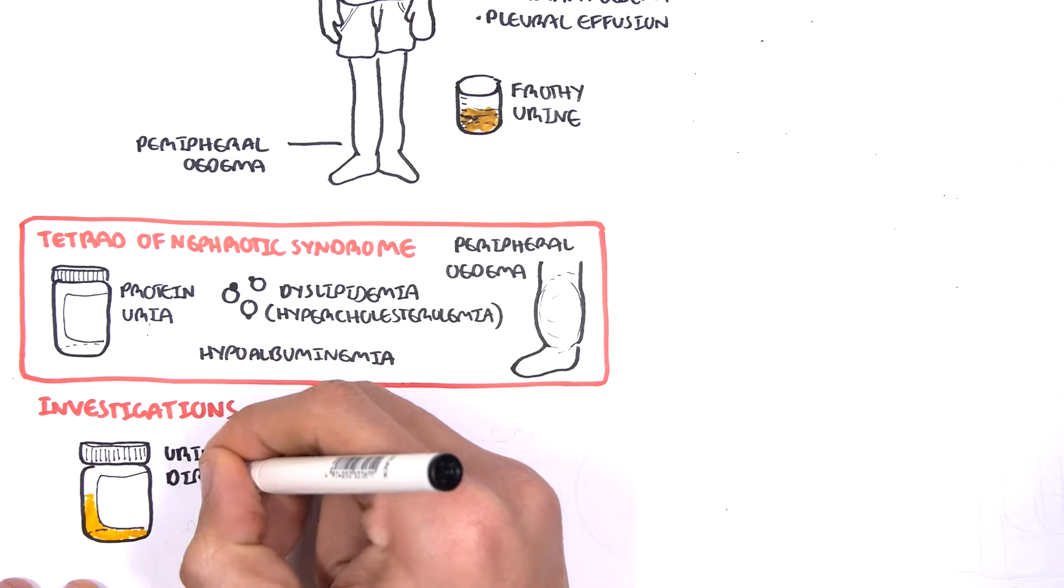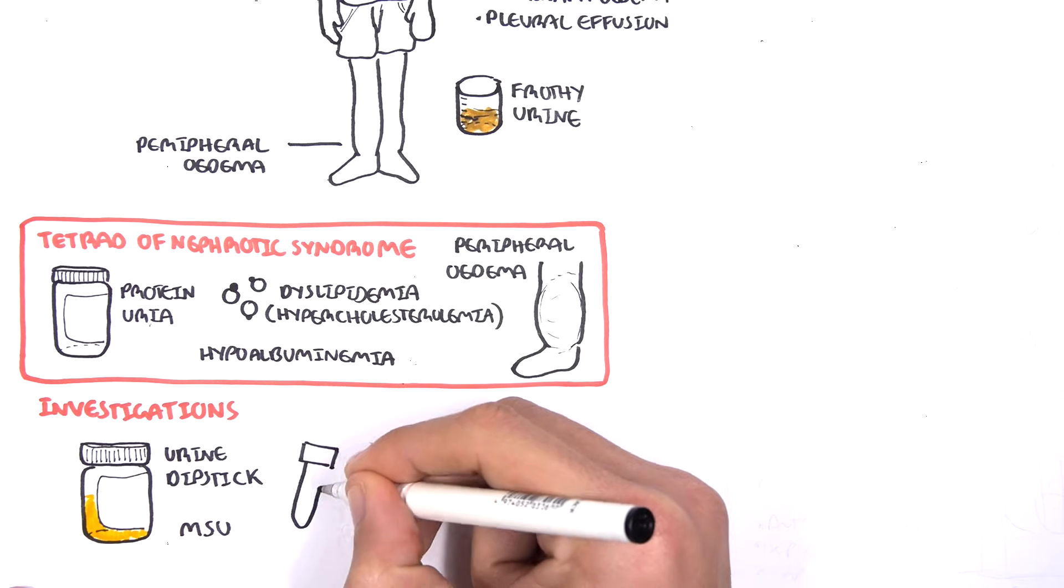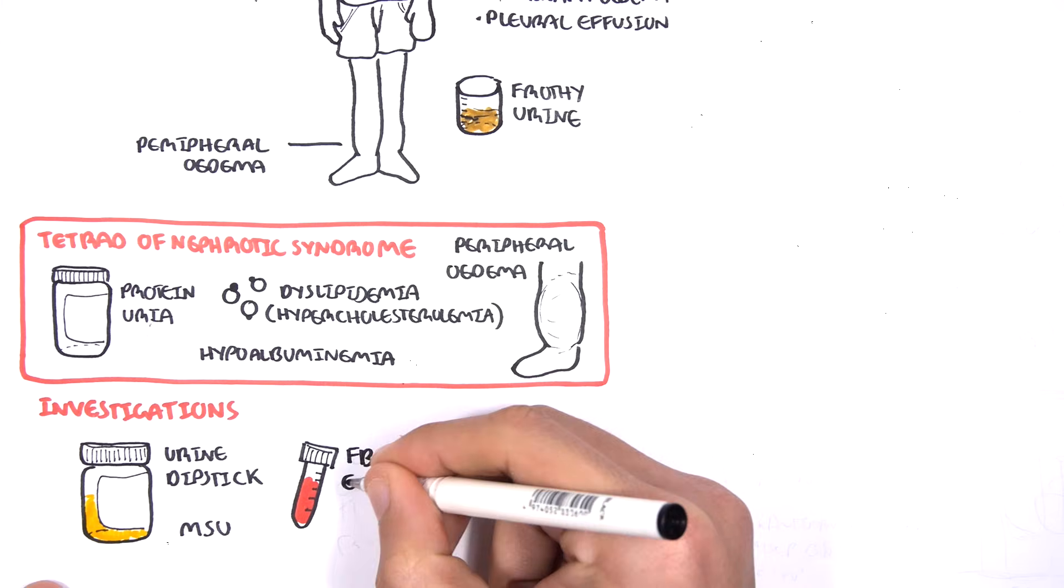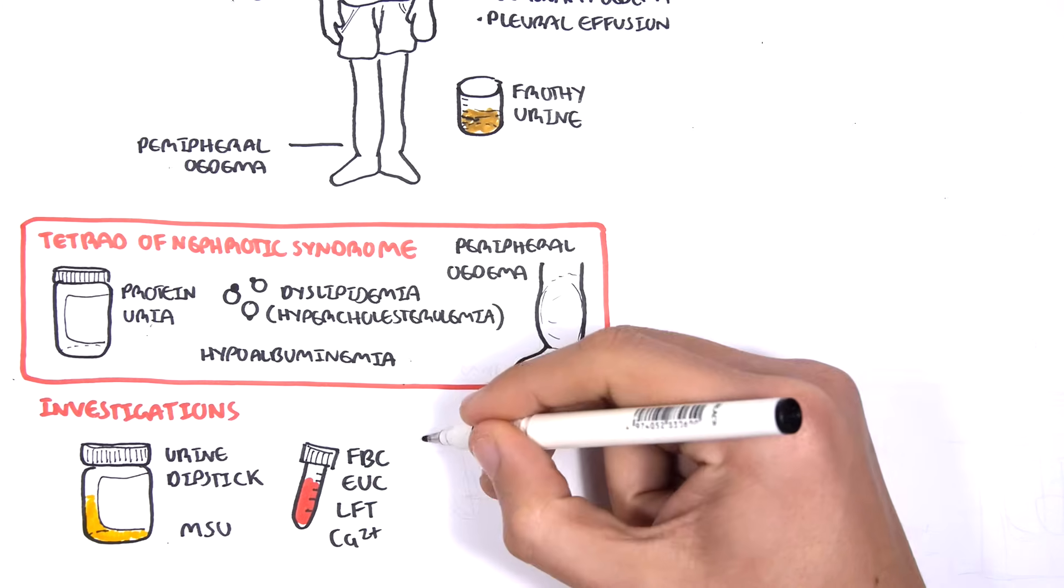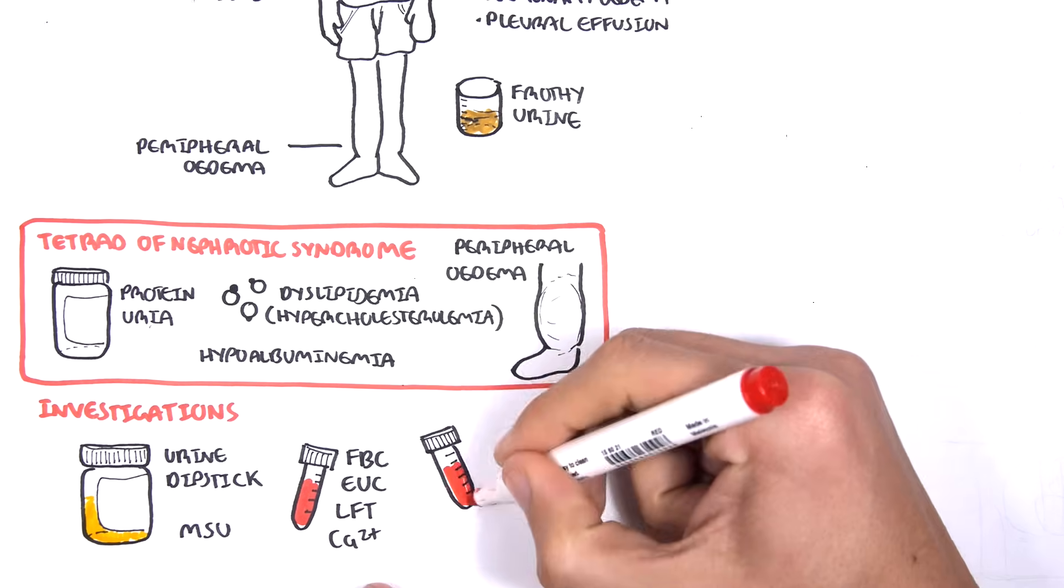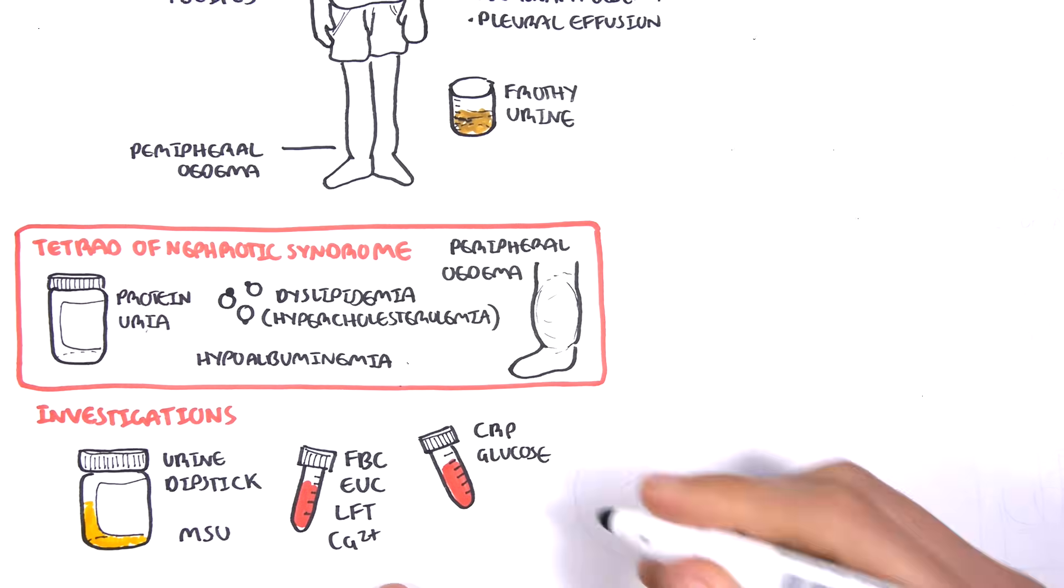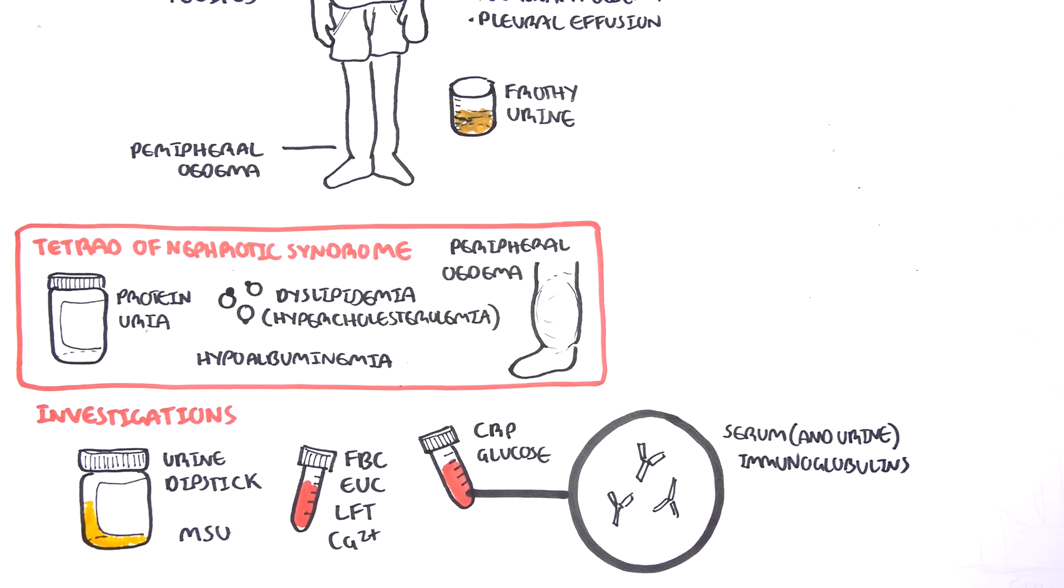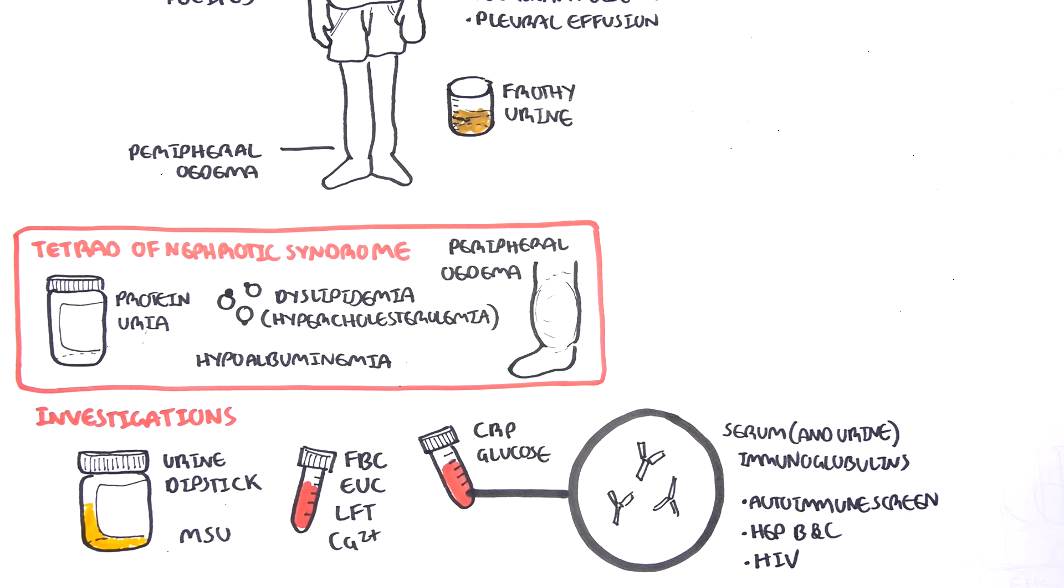Investigations include urine dipstick, MSU, full blood count, EUCs, liver function tests, calcium levels, CRP, and glucose. Serum and urine immunoglobulins are important to screen for autoimmune diseases and to check for immune response to hepatitis B, hepatitis C, and HIV, which are also causes of nephrotic syndrome.